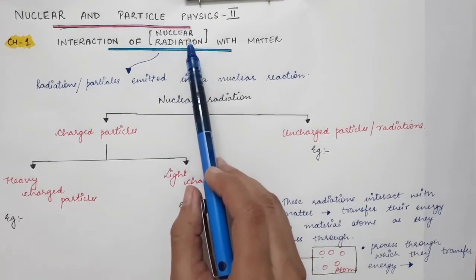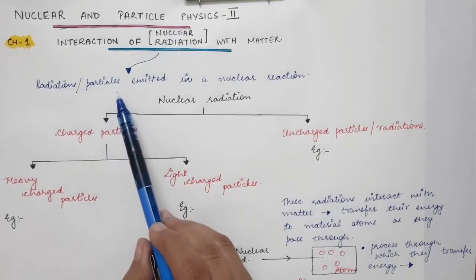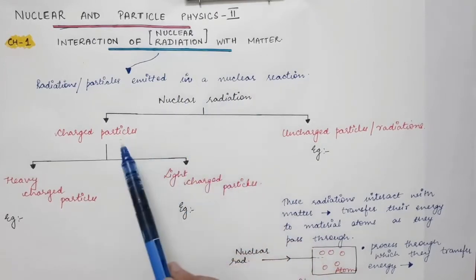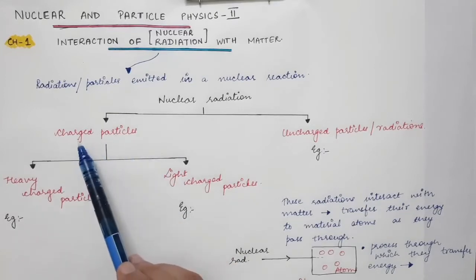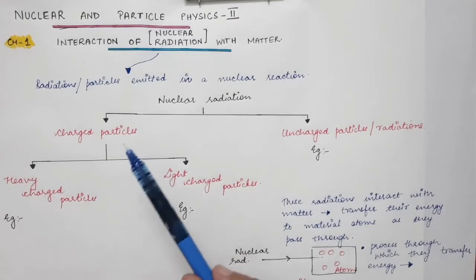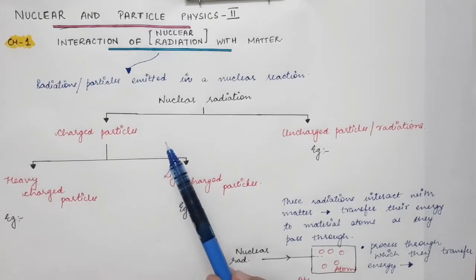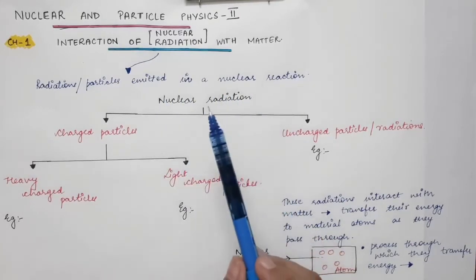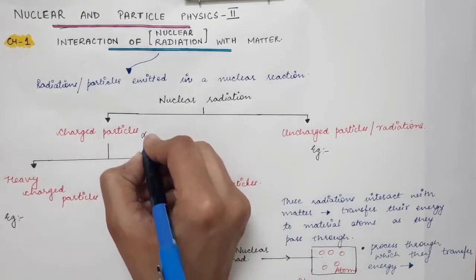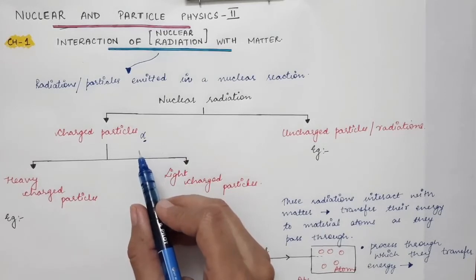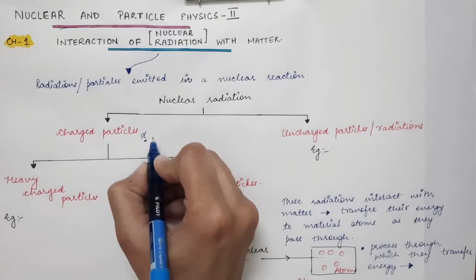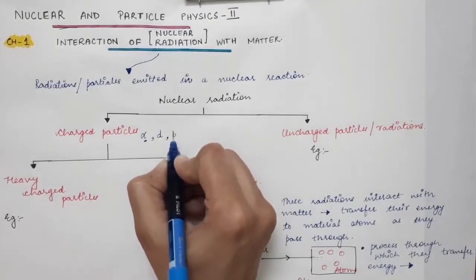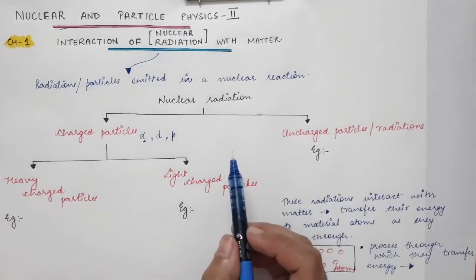Nuclear radiations are the radiations or particles which are emitted in a nuclear reaction. We broadly classify nuclear radiation into two types. The first type is charged particles — for example, the proton, alpha particle, and deuteron. The alpha particle is composed of two protons and two neutrons in a bound state, and the deuteron is a proton and a neutron in a bound state.